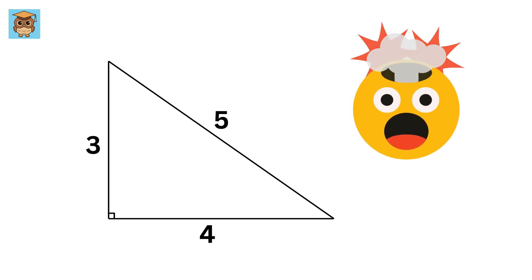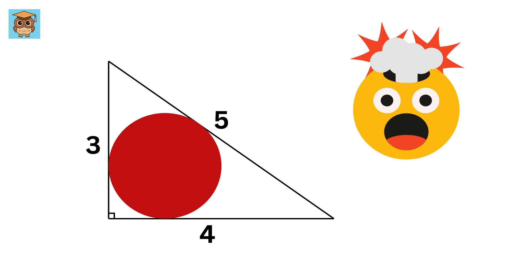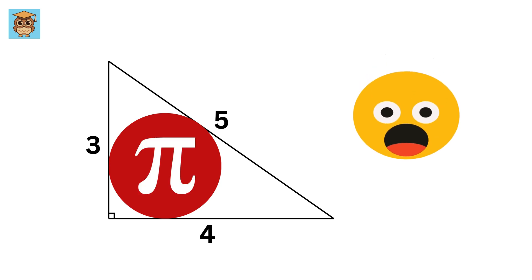But today, what we're going to show will literally blow your mind. Because if you inscribe a circle in any 3-4-5 triangle, then you won't believe it, but the area of this inscribed circle is exactly π. Let's see the math.